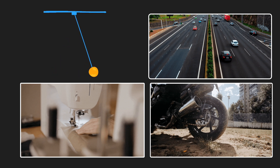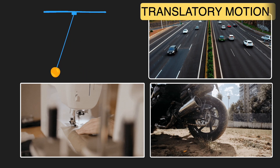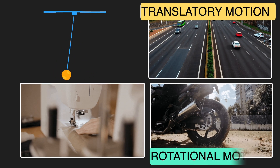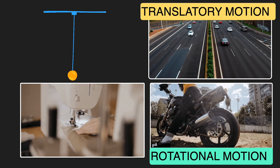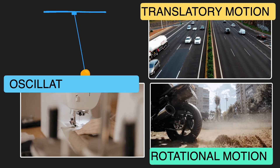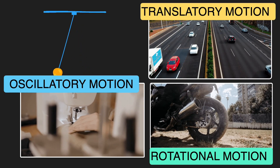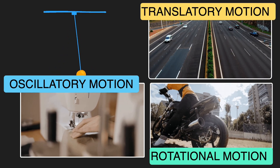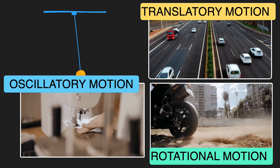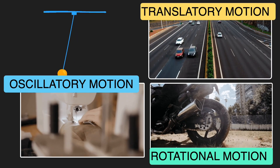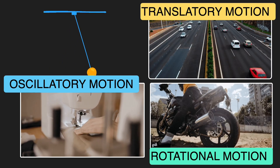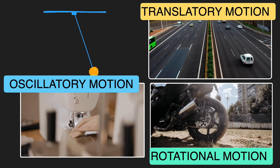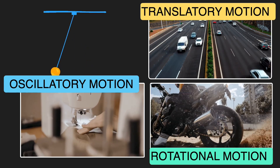The first one — you saw the traffic moving straight — that's called translatory motion. The second one — the tire spinning on the bike — that is rotational motion. And the sewing machine and the pendulum or the swing moving back and forth — that's called oscillatory motion. Now here is a deeper question: what makes a motion translatory? What makes a motion rotational? And what exactly defines to-and-fro motion? Let's dive further deeper and understand this.